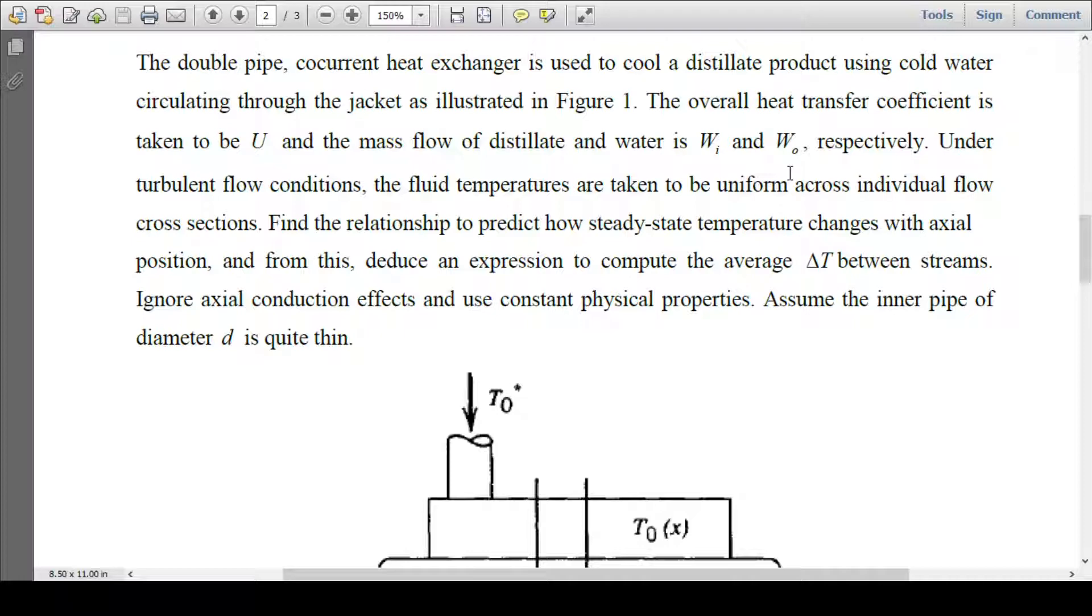The mass flow rate of distillate and water is taken as WI and W0 respectively. Under the turbulent flow condition, the fluid temperatures are taken to be uniform across individual flow cross-sections. We are supposed to find the relationship to predict how steady-state temperature changes with axial positions.